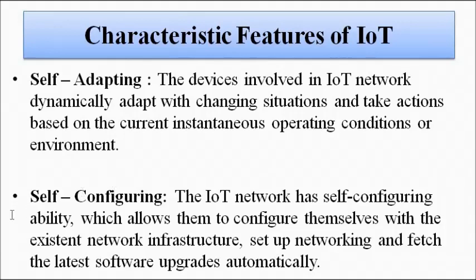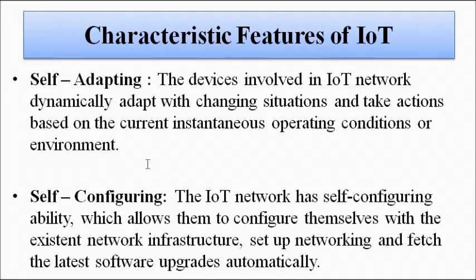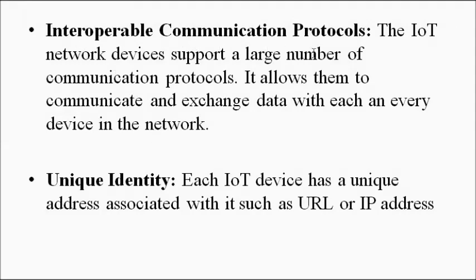The second feature is self-configuring, which means the IoT network has the capability to update itself according to the latest network features and infrastructure — to fetch the latest software upgrade package and set up networking automatically without human intervention. There is no need to manually upgrade a particular network; everything is automatic.